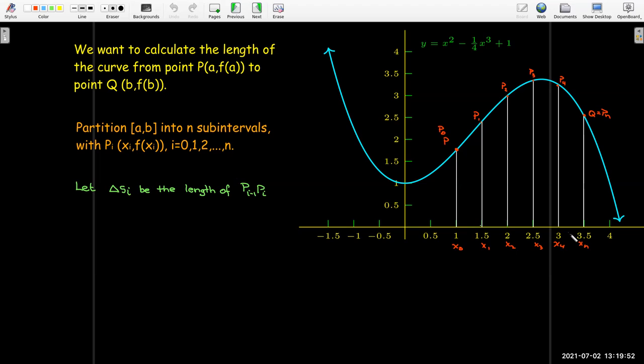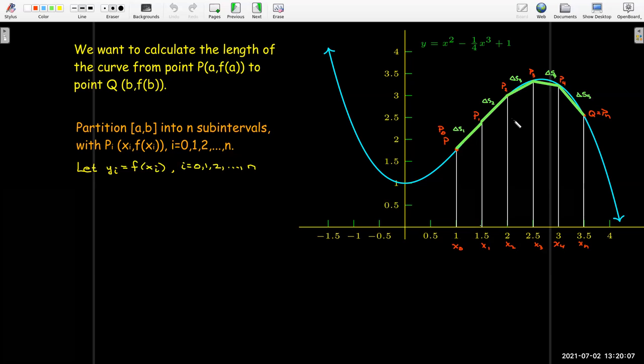I'm going to break up my x-interval into n sub-intervals. And then at each endpoint, I'm going to have a point P. And I'm going to connect those with just line segments, the secant line for the curve there. Calculate the length of each line segment and add that up. And that'll be my approximation for the length of the curve.